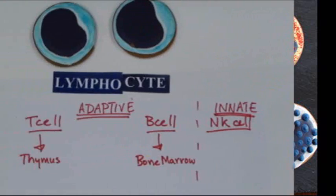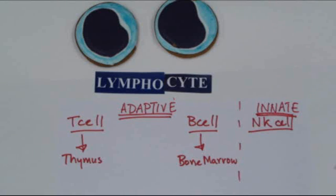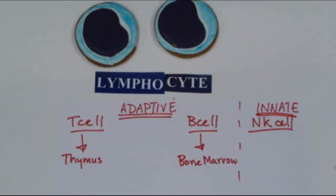In HIV, we will notice a decrease in the number of T cells circulating throughout the body. But when you have a viral infection or leukemia, you will see an increase of lymphocytes in the bloodstream. You will also see an increase of these lymphocytes during mononucleosis.